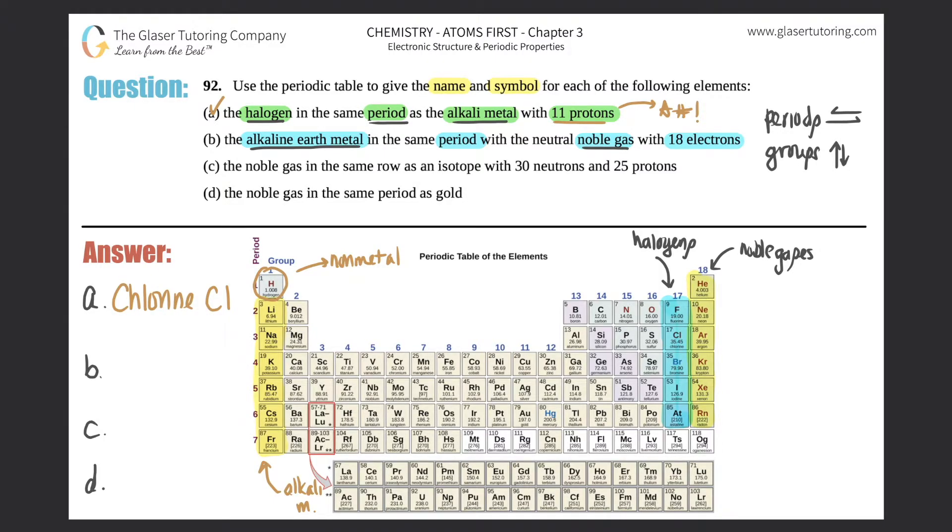Which noble gas are they talking about? They're telling you it's the neutral noble gas that has 18 electrons. If it's neutral, that means the number of electrons has to equal the number of protons. So 18 electrons equals 18 protons. If I scan my noble gases, which one has the atomic number of 18? It's argon, right there.